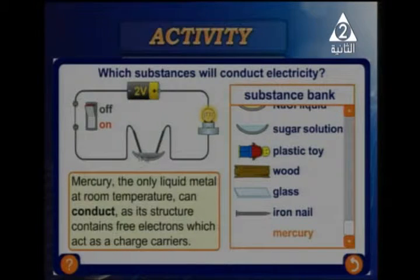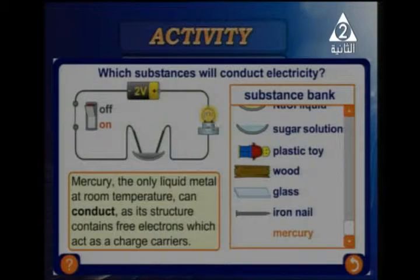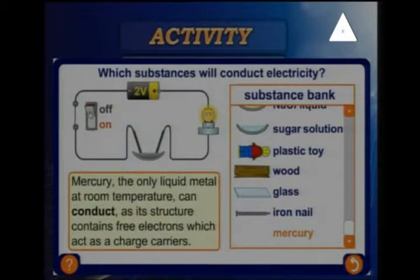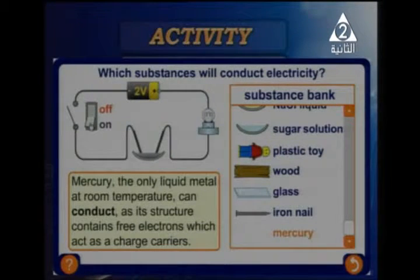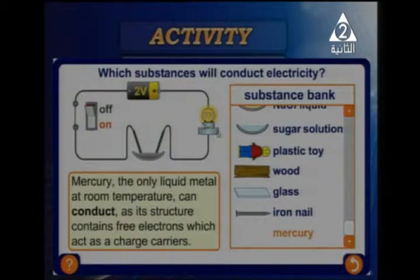Mercury makes a conduction of electric energy to the lamp from the battery. If I turn off the switch, the lamp does not light up. If I turn on the switch, we have the light bulb lighting up like this.